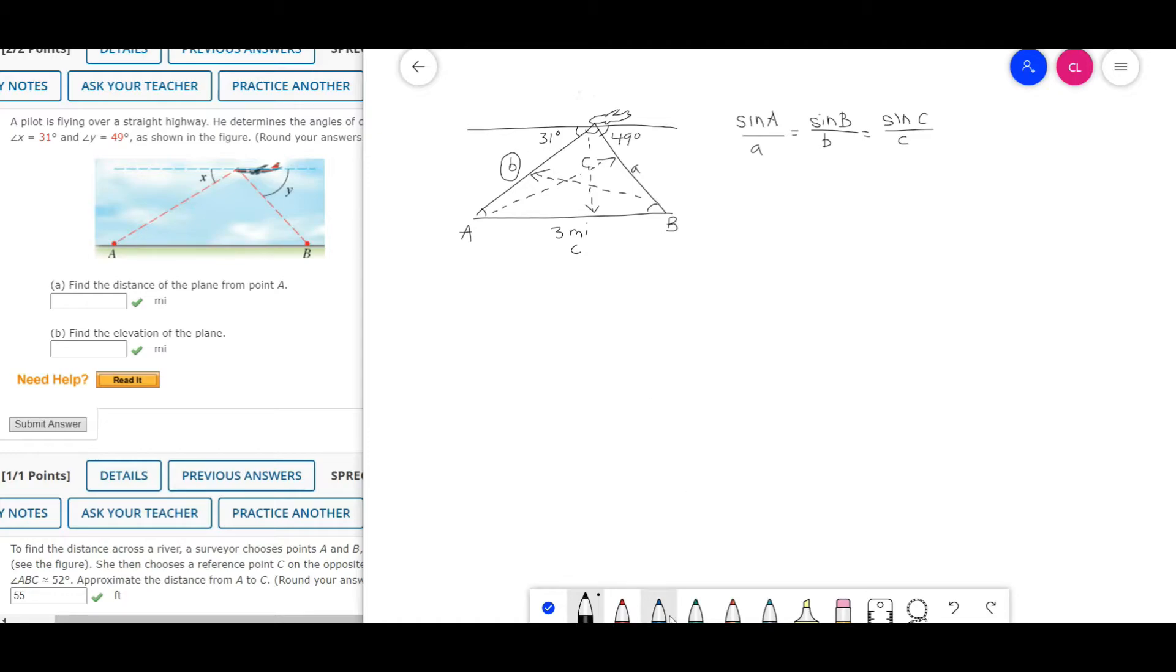If you take a look here, half a circle is 180 degrees. We're going to take 180 degrees minus the given angle X, 31 degrees, minus angle Y, 49 degrees, and that gives us angle C, which is 100 degrees.